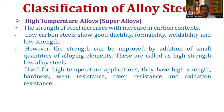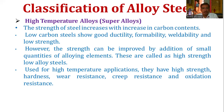The next classification is high temperature alloys, also known as super alloys. The strength of steel increases with increasing carbon content, so low carbon steel shows good ductility, formability, weldability, but low strength. Strength can be improved by addition of small quantities of alloying elements, giving high strength low alloy steels used for high temperature applications. They have good strength, hardness, wear resistance, creep resistance, and oxidation resistance.